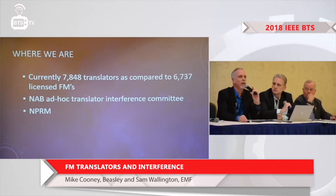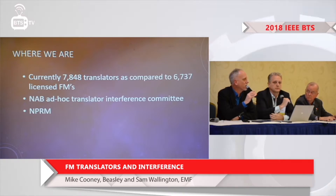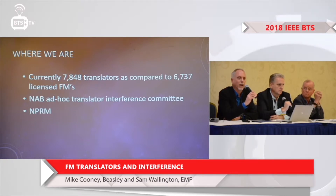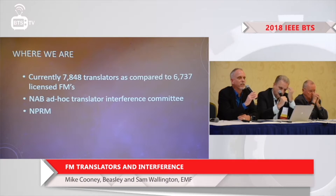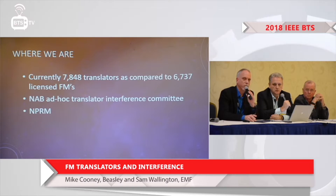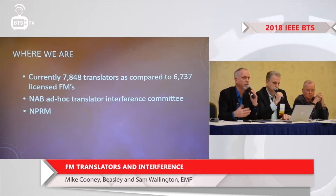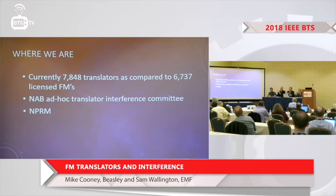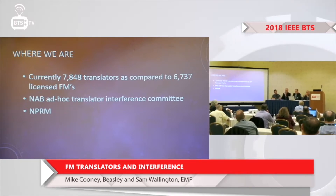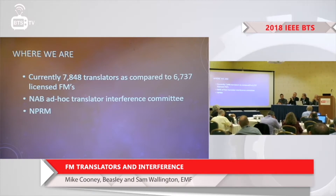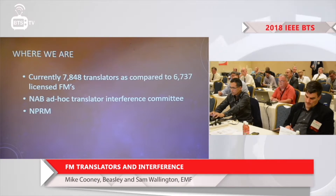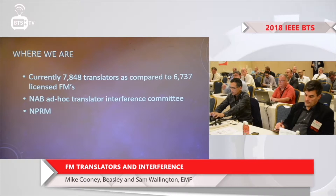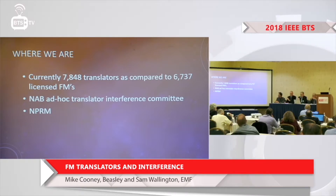I want to take you back in time for a brief history. The NAB put together an ad hoc committee on translator interference, and Mike and I were privileged to be on that committee, particularly because of our position as both station and translator owners. The committee had representatives from about eight or ten different companies with different perspectives — both engineering and management — trying to look at the translator situation and decide if something needed to be done. They agreed on a number of proposals; if you want to know what those are, simply read the NAB's filing that contributed to the FCC's NPRM.